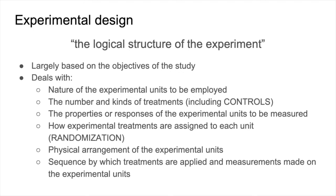Fourth, how experimental treatments are assigned to each unit. An important factor here is randomization, mostly because randomization limits bias and at the same time prevents systematic errors, which we will be discussing later. Next, you have the physical arrangement of the experimental units themselves. This is not just a logistical issue, but can also factor in limiting errors and biases in your experiments. And finally, the sequence by which treatments are applied and measurements made on the experimental units — referring to the timeline of your experiments, when you're going to be applying the treatments, how you're going to apply them, and when you will measure the effect on the experimental units.